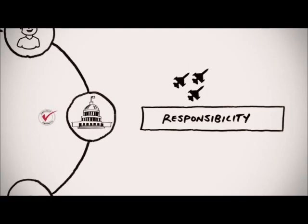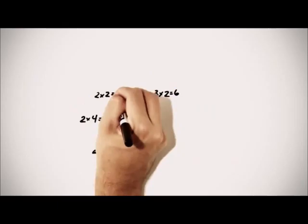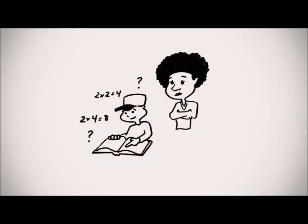Let me give you an example of what subsidiarity looks like in a family setting. Ten-year-old Manny is responsible for doing his math homework every night. But sometimes he encounters a really tough problem, and he needs his mom to step in and help.